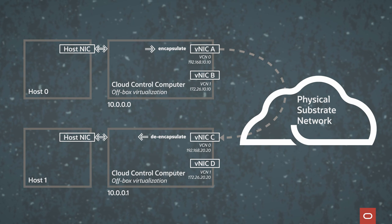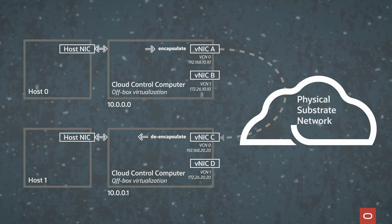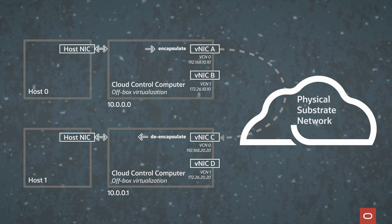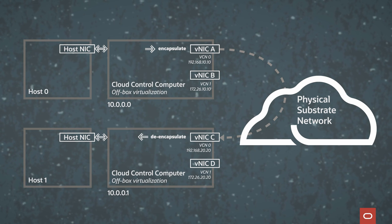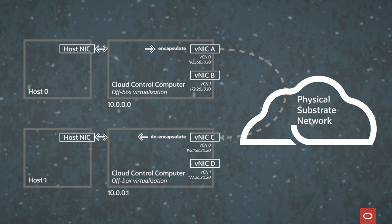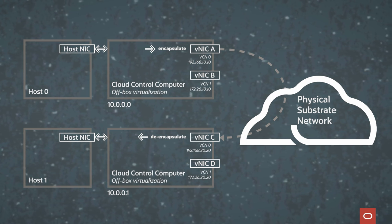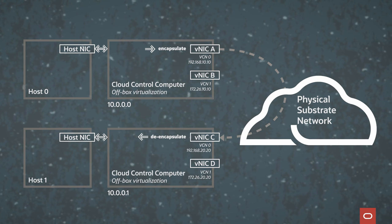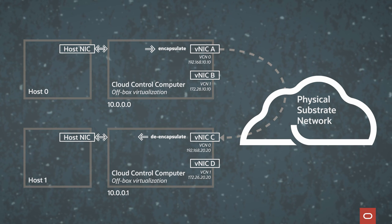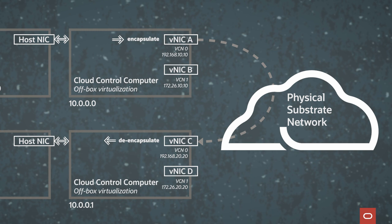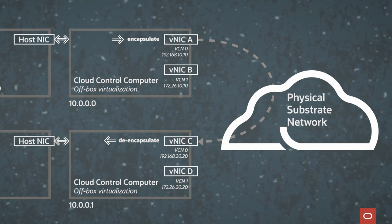Those customer interfaces can exist in different cloud virtual networks — or VCNs — and the customer can choose whatever IP address they want associated with those interfaces. When we need to send traffic from one destination to another, we have data provided by the control plane. For example, if we want to source traffic from a virtual interface with source IP 192.168.10.10 sending to 192.168.20.20, when that traffic arrives at our off-box device, we do a lookup in the data pushed down from the control plane: first, what cloud network is this being sent on?